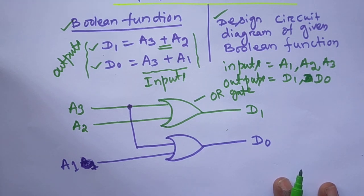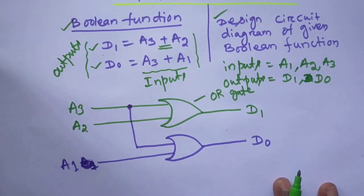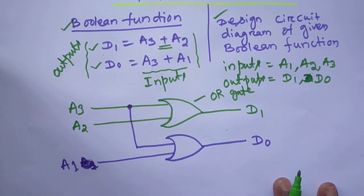I think all of you understand this topic — Boolean function from truth table of a 4-to-2 line encoder. I hope all of you understand. Thank you very much. If you enjoy these videos, please subscribe to my channel, and if you want to give some comments to improve these lectures, you can comment and like. Thank you very much, thanks.